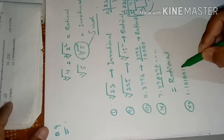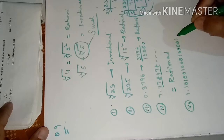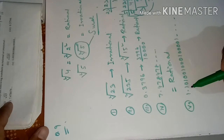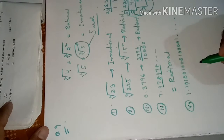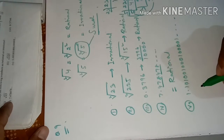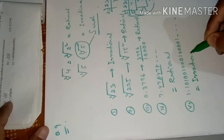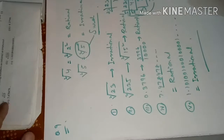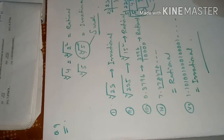Last number: 1.1010010001... Here 1 appears but then an extra 0 is added each time — the pattern is 1, 00, 1, 000, 1 — it is not repeating and it is non-terminating. So this is an irrational number. I hope you understand. Exercises 1.1, 1.2, and 1.3 have been completed successfully.